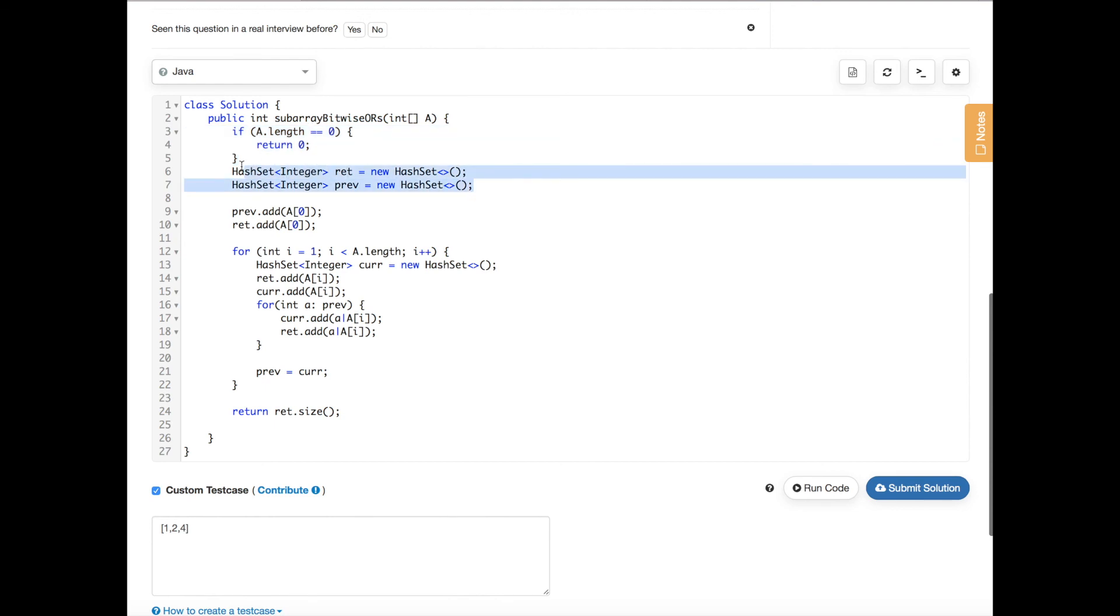Then we initialize two sets. The first set is called the return set where we're going to store every unique answer and then return its size. The second one is for keeping track of all the unique answers from the previous subarrays.